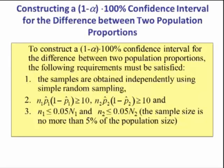Constructing a 1 minus alpha times 100% confidence interval for the difference between two population proportions. These are our three assumptions that must be satisfied before we can construct our confidence interval. The samples are obtained independently using a simple random sampling.